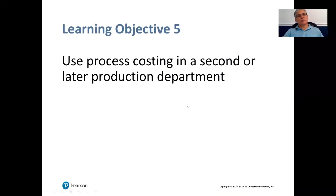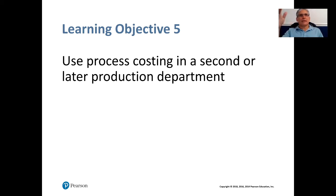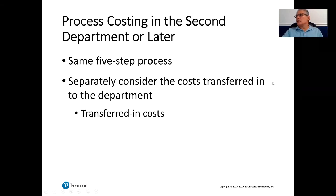Learning objective number five: use process costing in a second or later production department. What we just learned is how to account for money going into the first or initial process, and now we're going to see how that works going into second and later departments. There's the same five-step process we've already learned — separately consider the costs transferred into the department, or the transferred-in costs. This is from the second department's perspective.